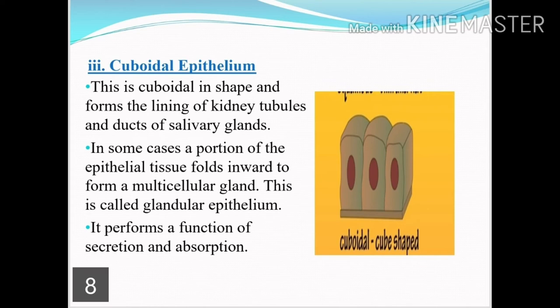The third type of epithelial tissue is cuboidal epithelial tissue. Because their shape is cube-shaped, they are called cuboidal. They are present in the kidney tubules and salivary glands. In some cases, a portion of the epithelial tissue folds inward to form a multicellular gland — where cuboidal epithelial tissue folds to form a gland. This is called the glandular epithelial tissue, and it performs the functions of secretion and absorption.